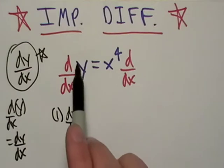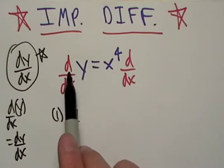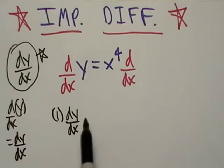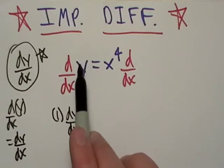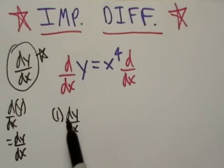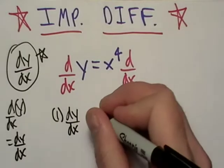So just remember, we're taking the derivative of y with respect to y pretty much. So which is one. We went ahead and took the derivative of y, and then we wrote dy/dx next to it because we don't know what that's going to be.